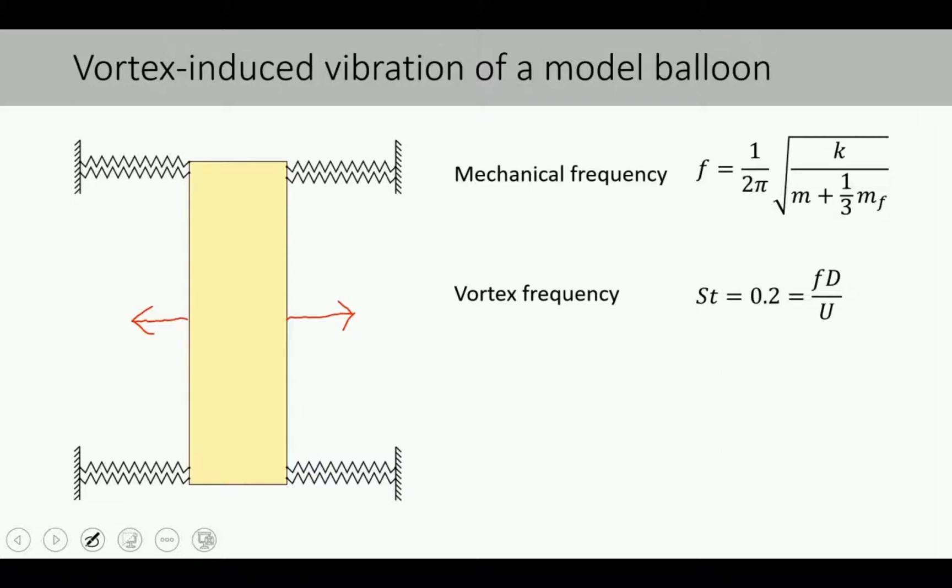To give you an example the parameters in this video are the following. It is interesting to note that the mass of the balloon is relatively small. Actually the mass of the springs is larger and therefore considered in the equation. This gives a mechanical frequency of approximately 6 Hz.